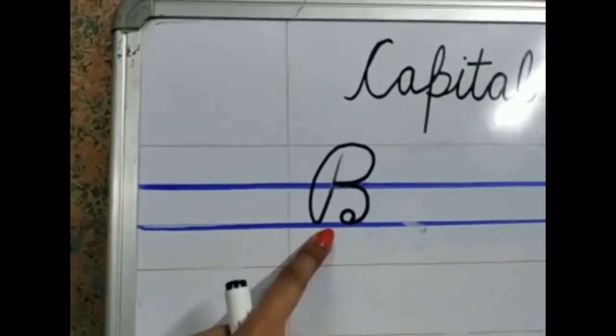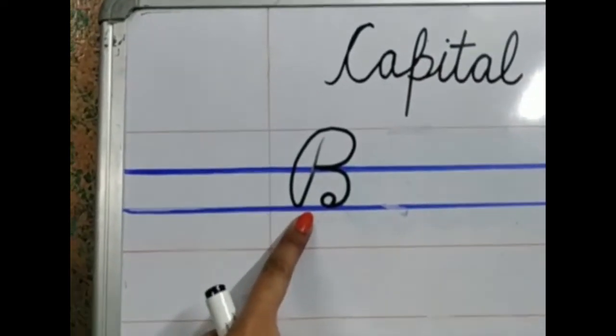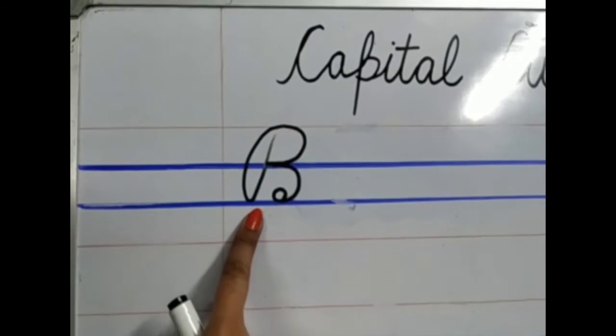Can you see the space? Yes. So this is how we are going to write capital cursive B.